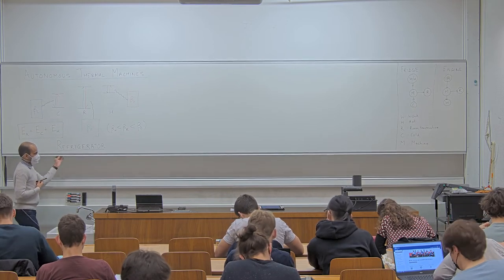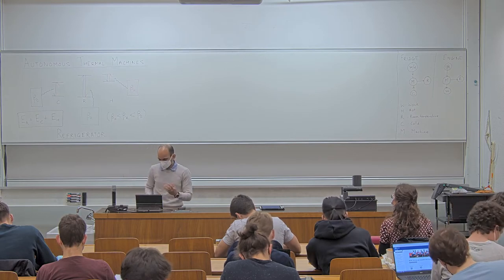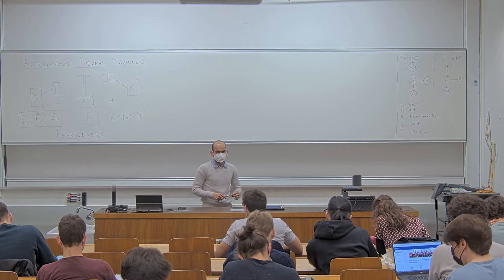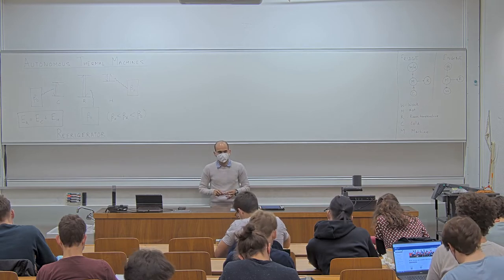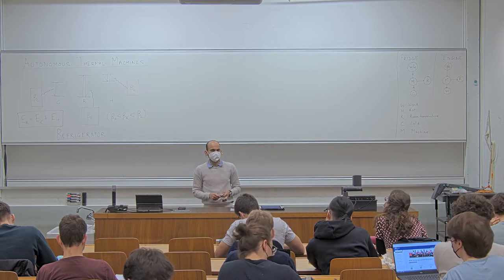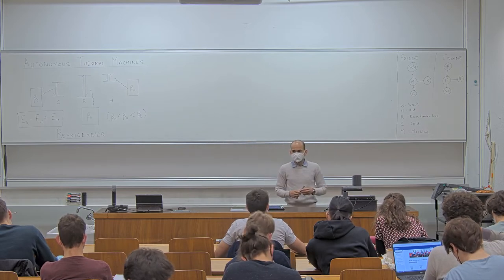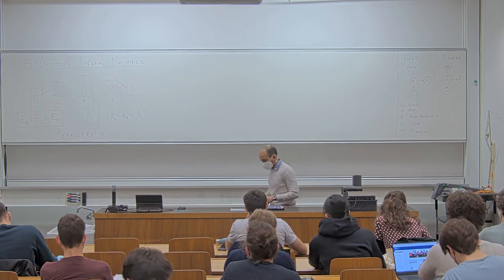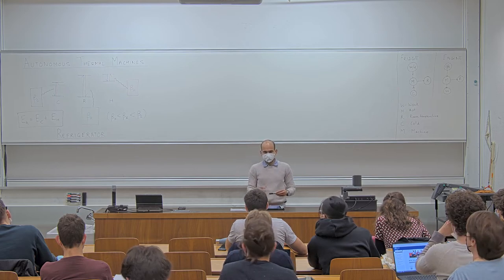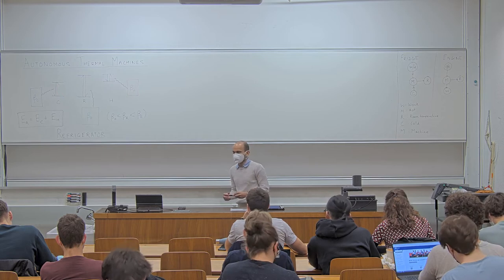Just before I begin, let me discuss why we would like to study autonomous quantum machines. So far in the course, everything that I've done has involved discrete operations. When we began the course, we first did a bit of static thermodynamics where we talked about the properties of a state, temperature, and virtual temperature. Then the first operation we did was the qubit swap, on which we based the entire erasure protocol and all of the generalizations from the last lecture.